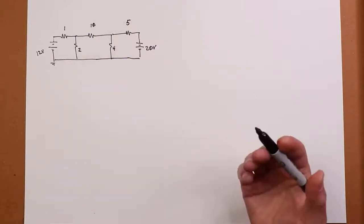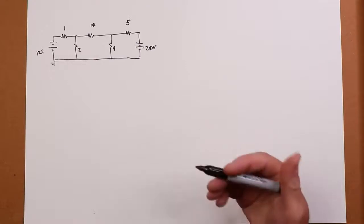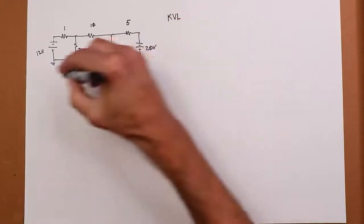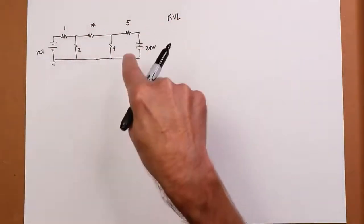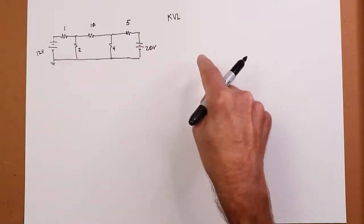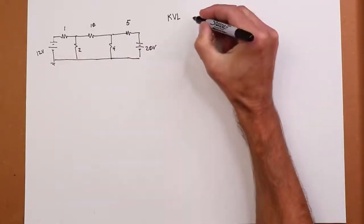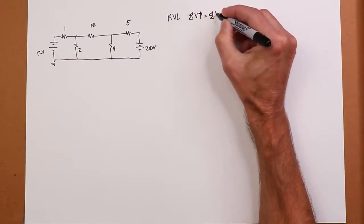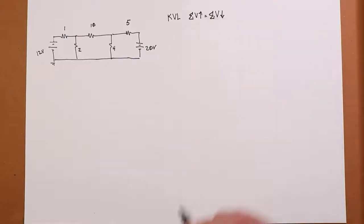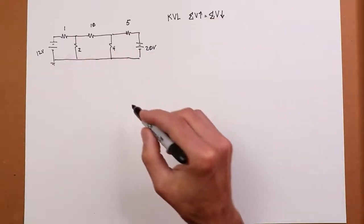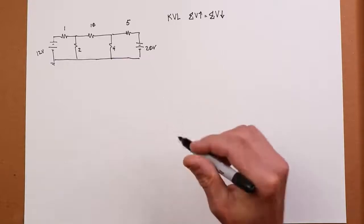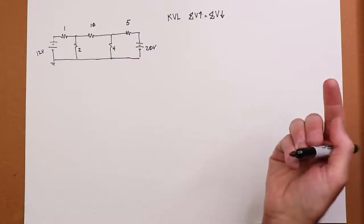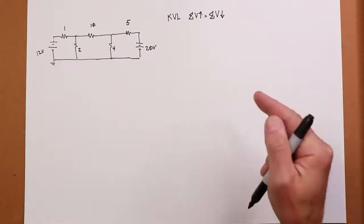Nodal works with Kirchhoff's current law. Mesh works with Kirchhoff's voltage law. So we're basically going to identify loops, sort of minimal-sized loops that cover all of the components when we're done.